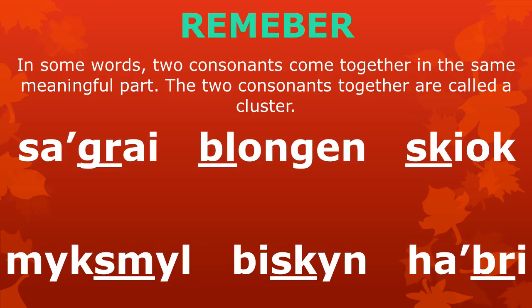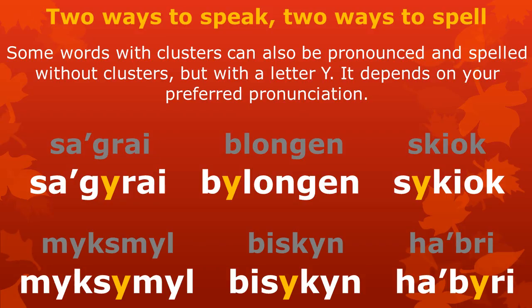So remember: in some words, two consonants come together in the same meaningful part — the two consonants together are called a cluster. Words like this are Sa'grai, Blongen, Skiyok, Mksmel, Bisken, and Habri. Some words with clusters can also be pronounced and spelled without clusters, but with the letter E. Two ways to speak, two ways to spell — what you spell depends on your preferred pronunciation: Sa'grai or Sa'erai, Blongen or BelonGen, Skiyok or Sekiyok, Mksmel or Meksemel, Bisken or Biseken, Habri or Haberi.